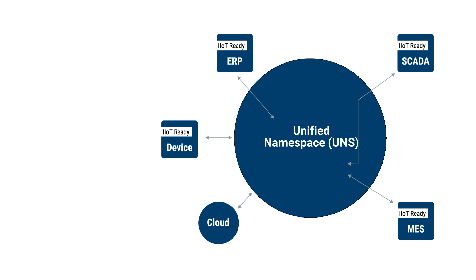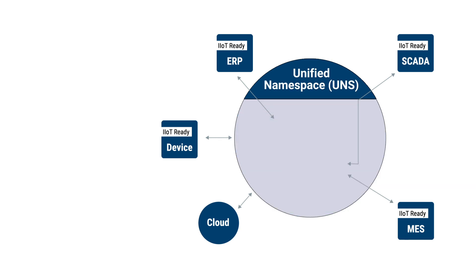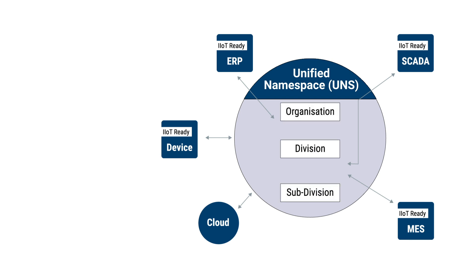To make the data meaningful to all components in your enterprise, you want to create a standard way of organizing and naming the data. The naming convention should reflect the actual structure of your business, from top-level business units down to a controlled device on the shop floor. The namespace contains all the events of your business as they happen — the structure is the hierarchy.